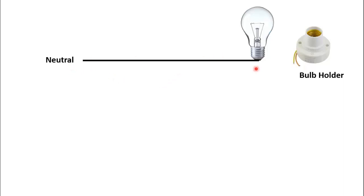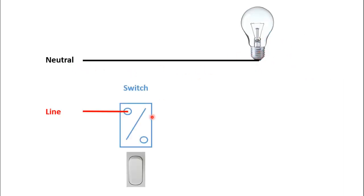First of all, this lamp represents a bulb holder. The first connection is to directly connect the neutral to one end of this bulb holder. Then place a switch and connect one end of this switch with the phase, or you can say the line. A representation of a switch is shown here.